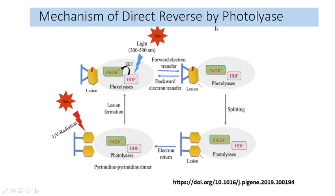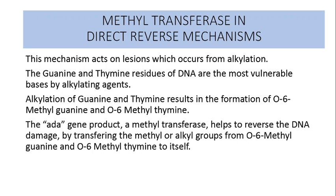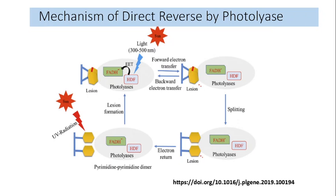This is called direct reversal by photolyase. In DNA photolyase, the pyrimidine dimer lesions bind through a dinucleotide flipping mechanism prior to repair. The pyrimidine dimer is flipped outwards into the active site cavity containing the cofactor FADH2. The two cofactors FAD and methylene tetrahydrofolate play a vital function in enzyme catalysis, and the PHRA gene codes for the specific DNA photolyase involved in this mechanism.